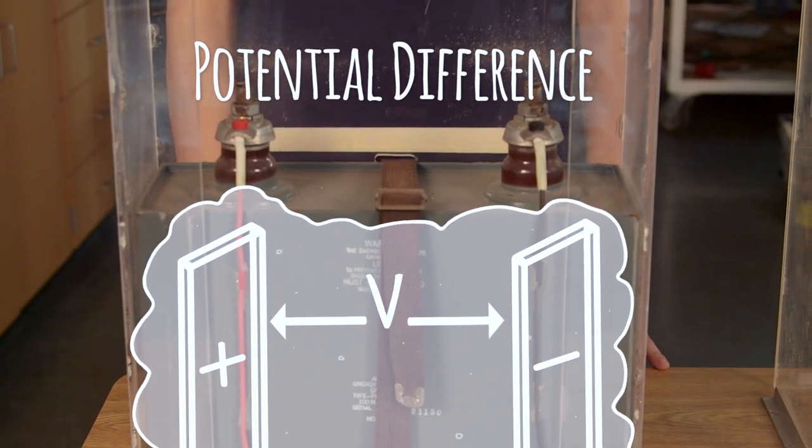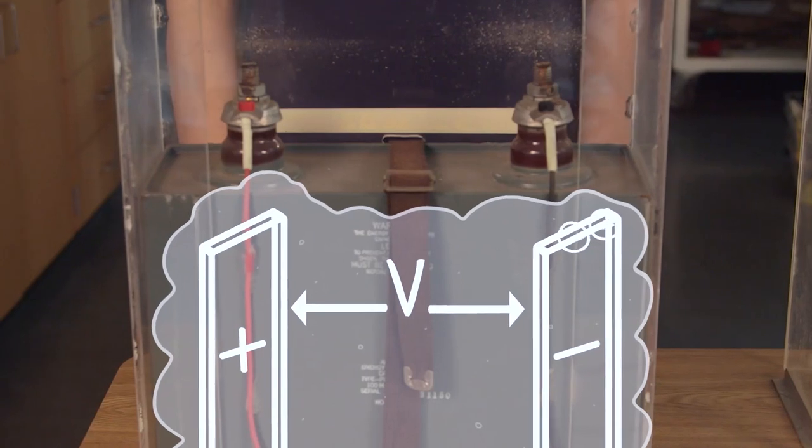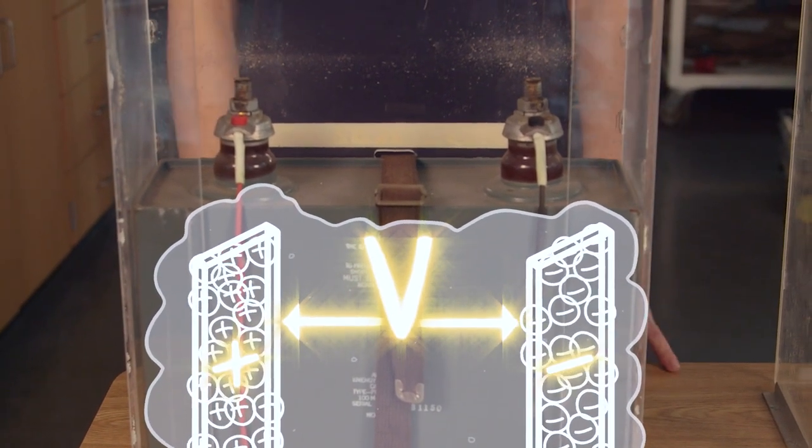This creates a potential difference, some voltage across the capacitor. Potential difference is kind of like potential energy. The more charge you build up between the plates, the more voltage you have, and the more energy you have stored in the capacitor.